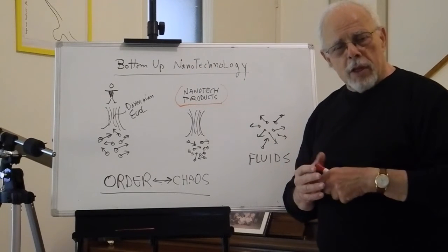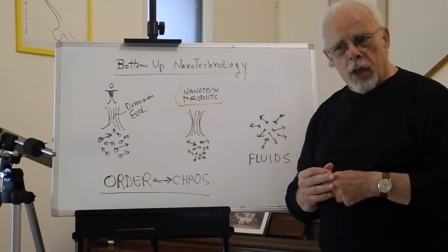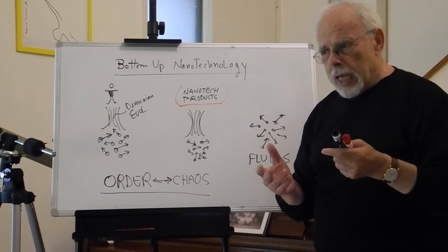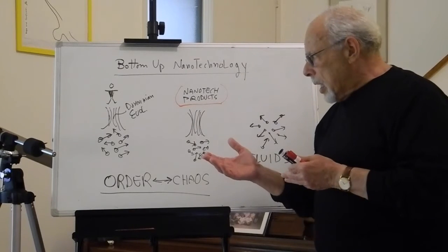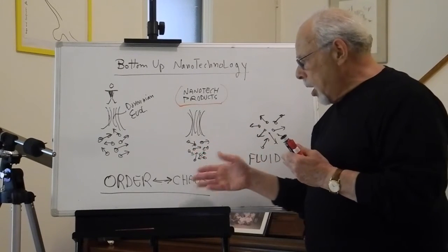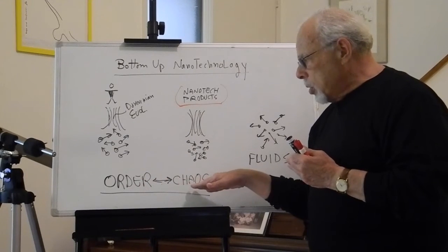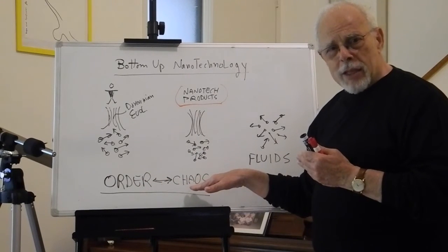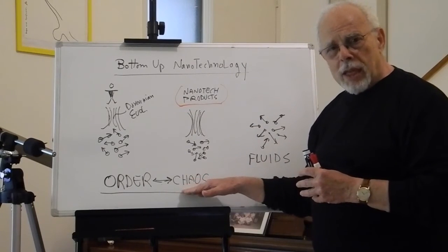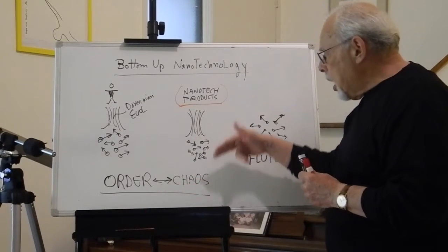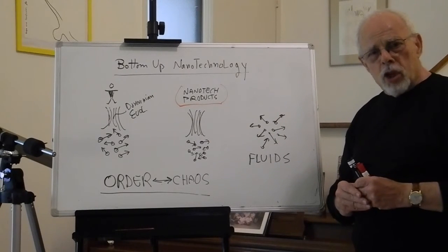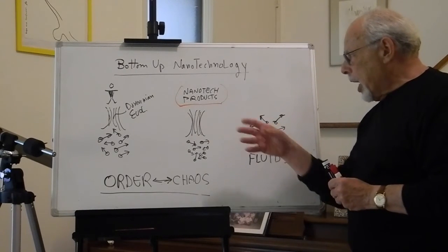But then came the 20th century and taught us about quantum physics, saying at the bottom of things there is randomness in physics. So right now we're trying to come up with some balance between the order of science and the power of randomness and chaos, and that's what the field of bottom-up nanotechnology is trying to exploit.